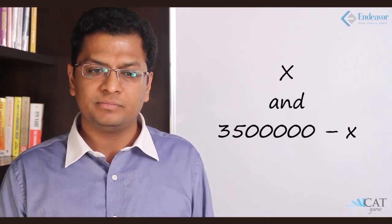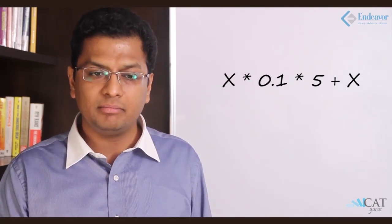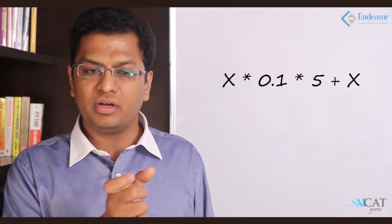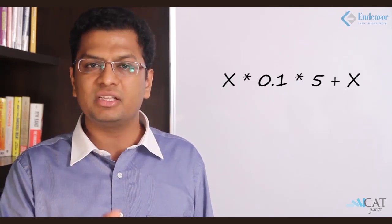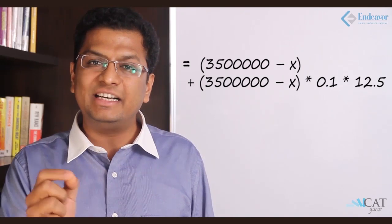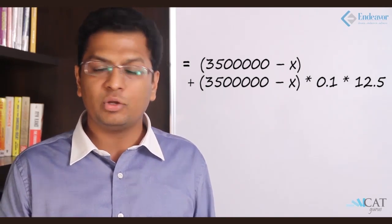We break the thirty-five lakhs into two parts: x for the elder daughter and (35 lakhs − x) for the younger. For the elder daughter: x × 0.1 × 5 + x equals her final amount. For the younger: (35 lakhs − x) + (35 lakhs − x) × 10% × 12.5 equals her final amount. Since both amounts are equal, solving gives x = 21 lakhs for the elder daughter and 14 lakhs for the younger.